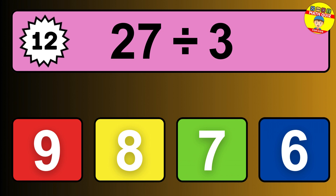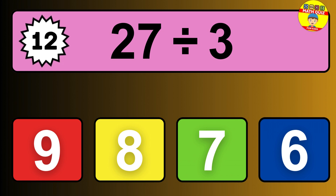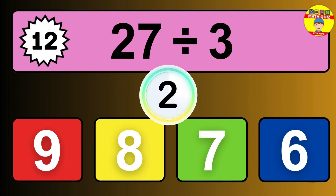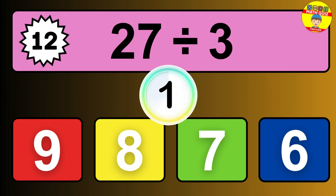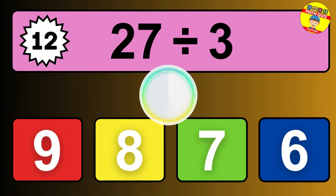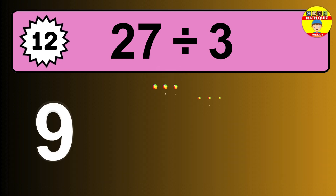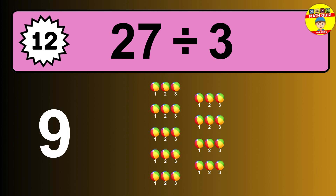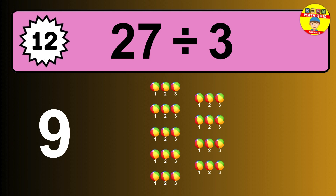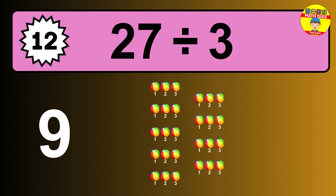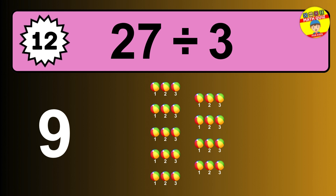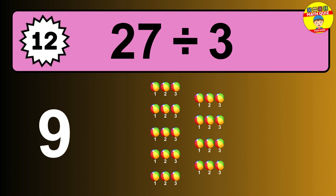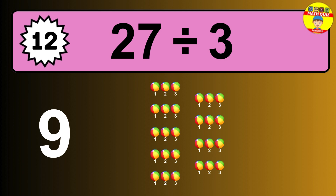27 divided by 3 is... time to think. Let's go to the solution. Divide the number 27 by 3. Each group contains 3 units. So dividing 27 by 3 results in 9 equal groups. Thus, the result is... 27 divided by 3 equals 9.